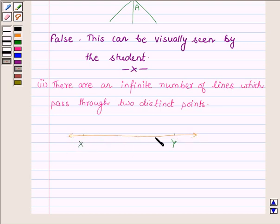And on observing, we find that there is only one line which passes through these two points, and we cannot draw any other line through these two points. Also by Axiom 5.1 of your book, which says given two distinct points there is a unique line that passes through them, therefore the given statement is false.